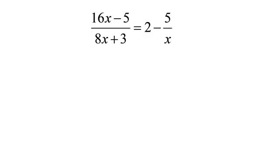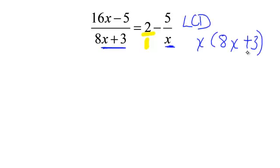Let's try one more. We have (16x minus 5) over (8x plus 3) equals 2 minus 5 over x. Would you look at these fractions! I have three terms. The first term is over 8x plus 3, the second term, the 2, is just over 1, and the third term is over x. I need to find my least common denominator: I need an 8x plus 3 and I also need an x. So my least common denominator is x times (8x plus 3), and I have to multiply that by every term.